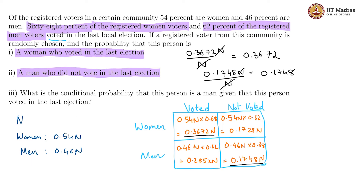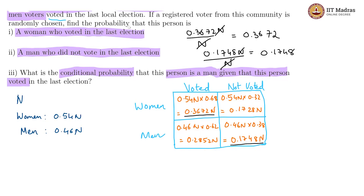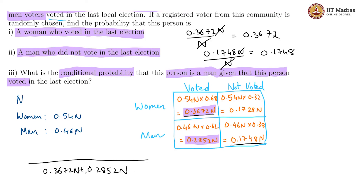Lastly, we are looking for the conditional probability that this person is a man given that this person voted. For that we look only at the voted cases — the sum of women who voted and men who voted makes the denominator. So we have 0.3672 plus 0.2852 in the denominator, and the numerator is the number of such men, which is 0.2852n. This comes out to be roughly 0.43715. So yeah, this value is 0.43715 — this is the conditional probability.